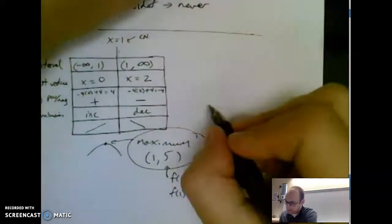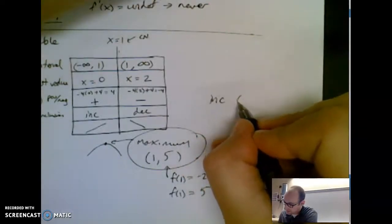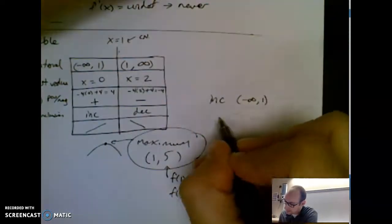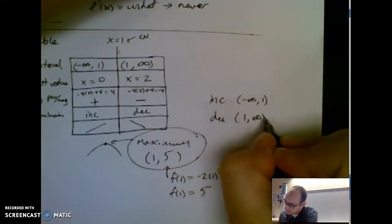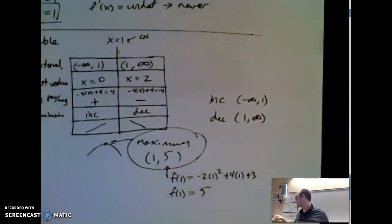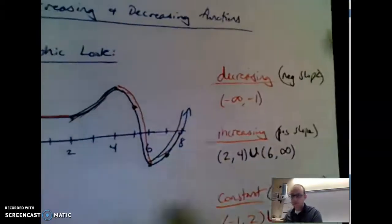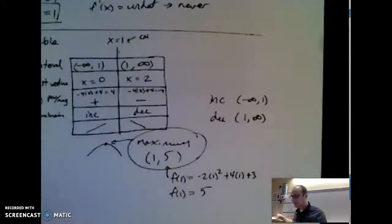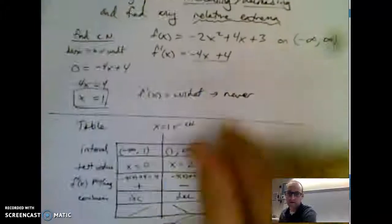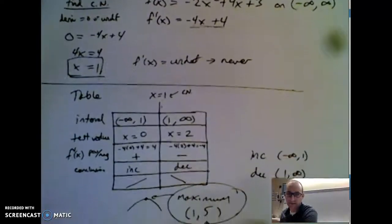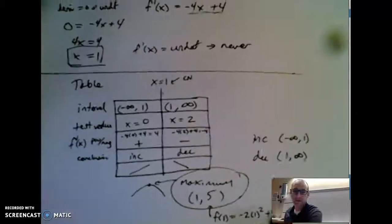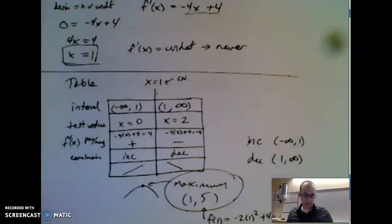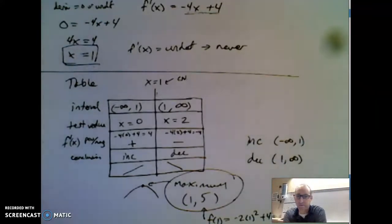So my graph is increasing from negative infinity to 1 and decreasing from 1 to infinity. I didn't even need a graph — that's the exact same result we got by reading the graph earlier, but now we can do it just from the equation using derivatives. You probably have a graphing calculator, but what's cool about this method is it works for any problem. I'll come back with a couple more examples to get you good at these.